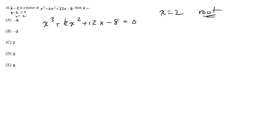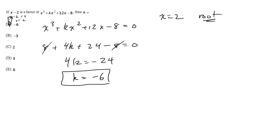So the key is to remember that if you're given a factor, you're also given one of the roots. So that means I can plug this 2 in for x and I'll just be able to solve for k. So I get 8 plus 4k plus 24 minus 8 equals zero. Minus 8 and 8 cancel, so I get 4k equals negative 24. So k equals negative 6 and that's choice A.